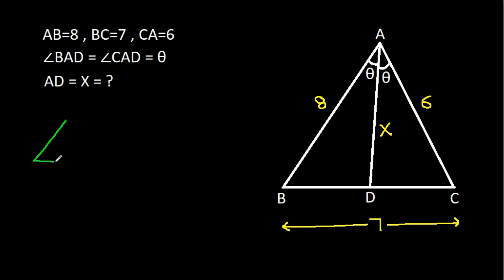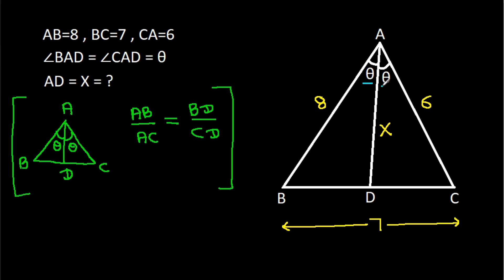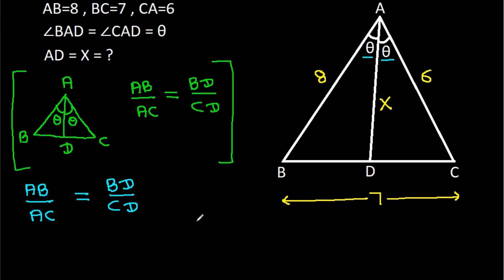In triangle ABC, if AD is the angle bisector, then AB by AC will be equal to BD by CD. Since these two angles are equal, AB by AC equals BD by CD. AB is 8 and AC is 6, so it is equal to BD by CD.